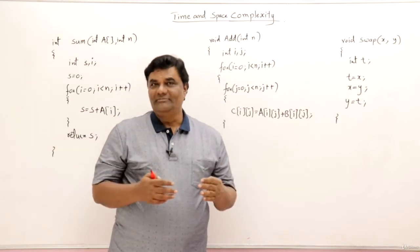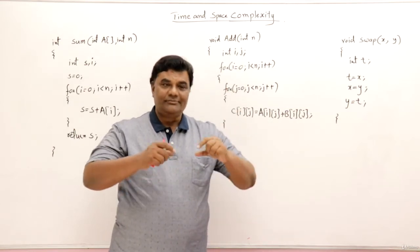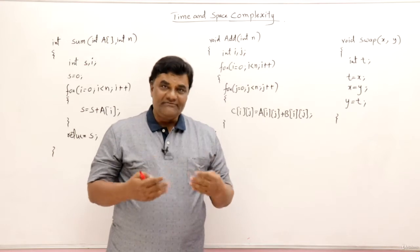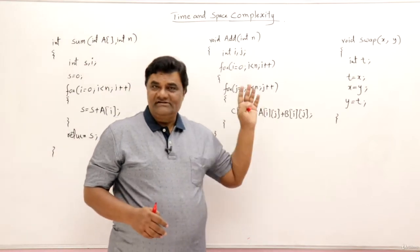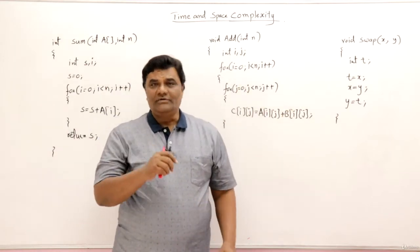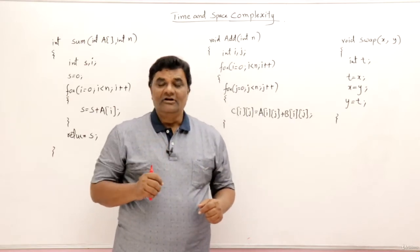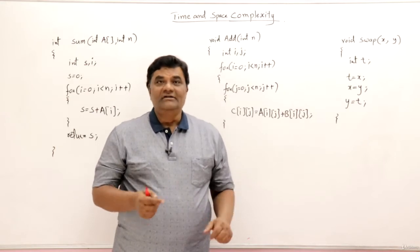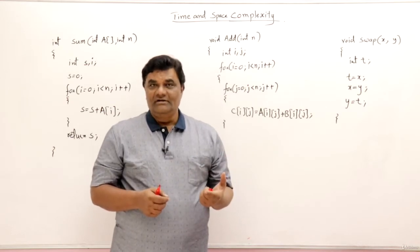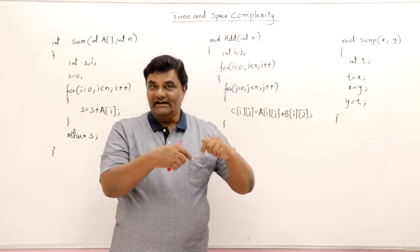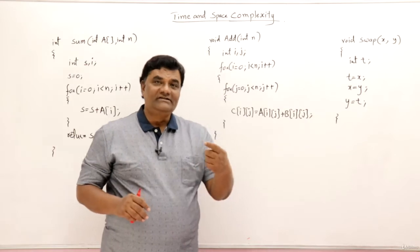Now let us learn how to find out the time complexity from program code. When we analyze program code, we get a proper time function. So how to get the time functions we will learn about this. For explaining, I have taken three example program codes. Now how to analyze? We assume that every simple statement in a function or program takes one unit of time. What does it mean by simple statement? The statement may be having arithmetic operations, assignment, or conditional statements. If it is more complex, then we have to study that also in detail. So let us see how to get the time function and how to find the time complexity.